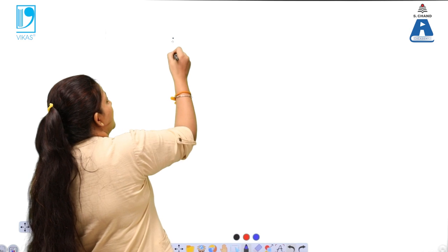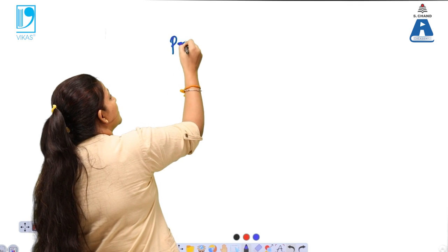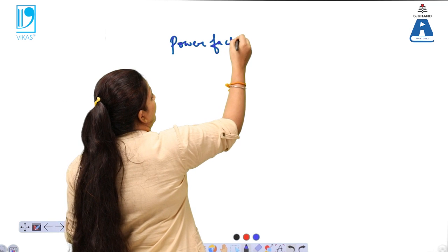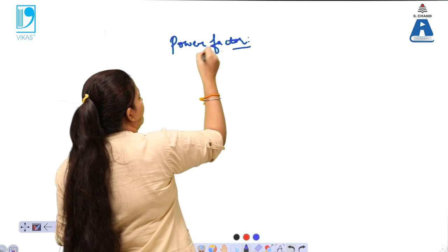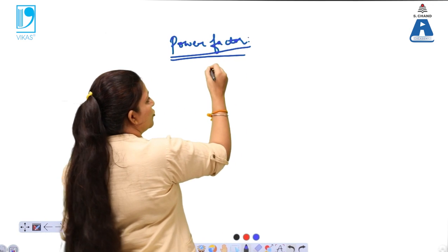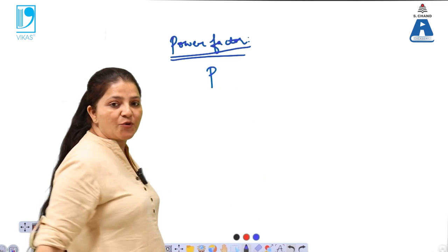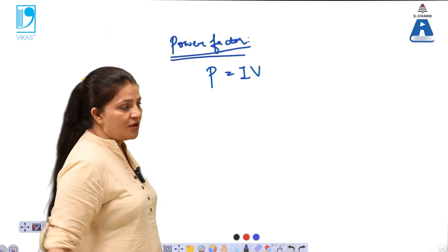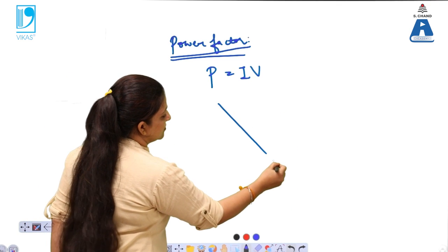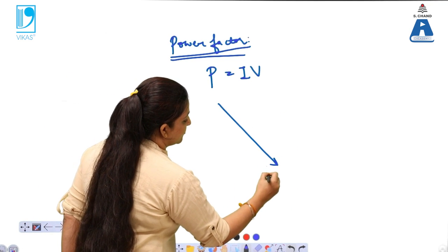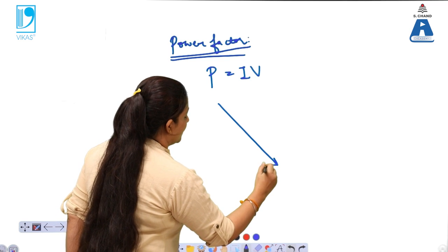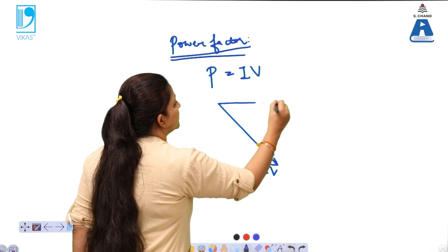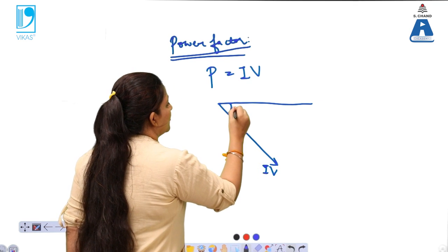So the first term is the power factor. In order to explain this term, we know that power is a product of current into voltage. Now if the power is drawn like this, if this is the IV power, I into V, and it makes an angle theta with the X axis.